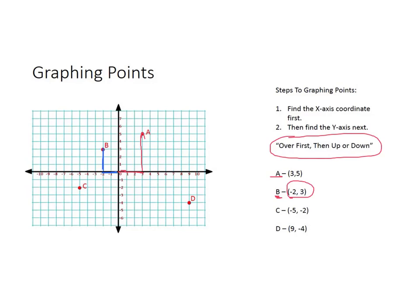To find C, you would tell them (-5, -2). On the x-axis, left to right, you go over to the negative 5, and then down negative 2. And the last example on here is (9, -4). X-axis is all the way over to the 9, and then down negative 4.